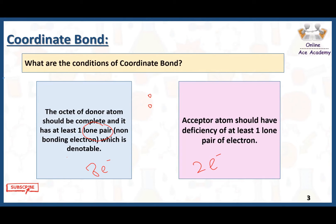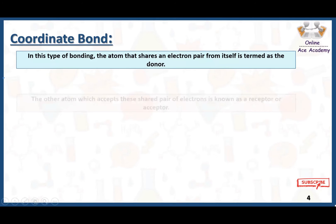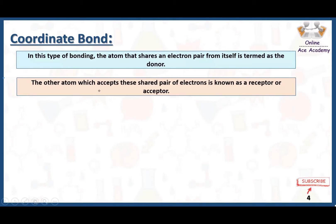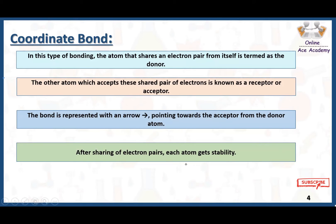Lone pairs are non-bonding electrons present in any atom. In coordinate bonding, the atom that donates an electron pair is termed the donor, and the atom which accepts that shared pair is the acceptor. The bond is represented with an arrow pointing from the donor towards the acceptor atom. After sharing of the electron pair, each atom achieves stability.